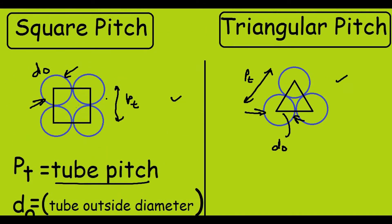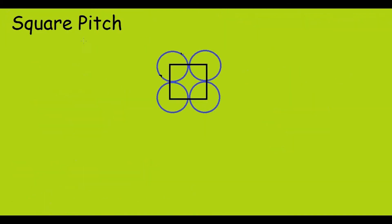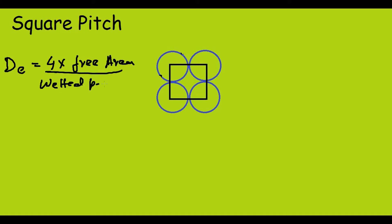For the square pitch, the equivalent diameter is equal to 4 times the free area divided by the wetted perimeter. The free area is this shaded region. To calculate this, we need to calculate the area of this square and subtract the area of these 4 quarter circles.